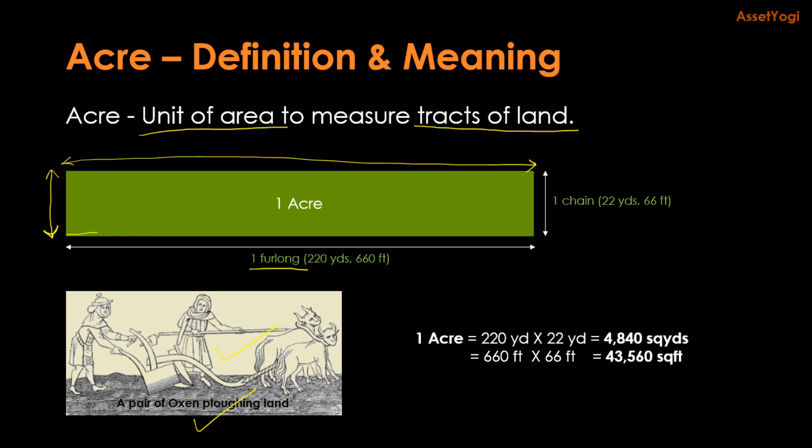So a typical farmer would plow for one furlong length like this, then give rest to his oxen, meanwhile turn the plow and then come back the other way like this. I know the lines are not straight, but I think you get the idea. And the similar process will go on for the whole day.